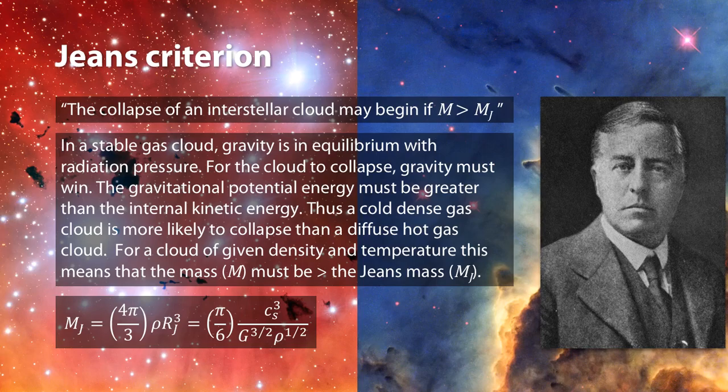Because the gravitational potential energy is going to be a lot less than the kinetic energy of the particles. So that's the Jeans criteria and the Jeans criterion basically says that the collapse of an interstellar cloud may only begin if the mass of that cloud is bigger than the Jeans mass.